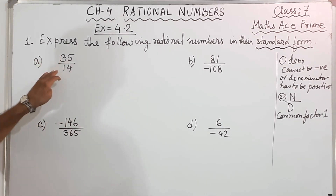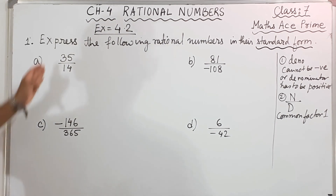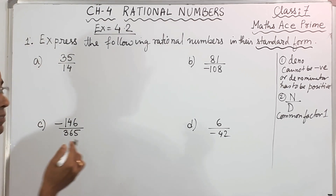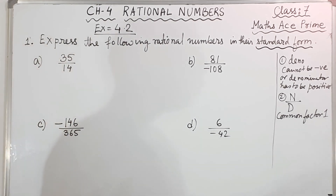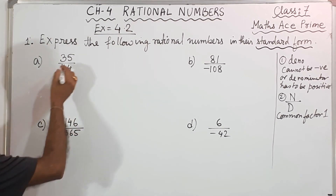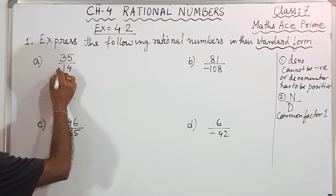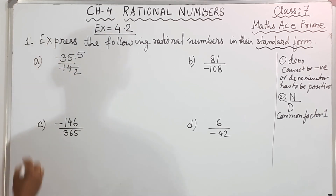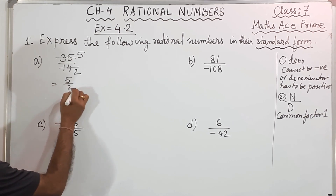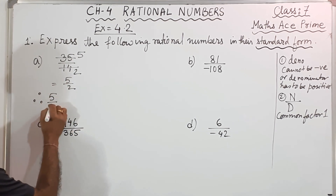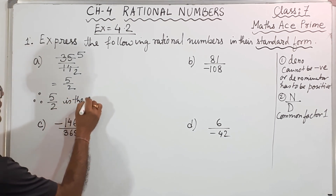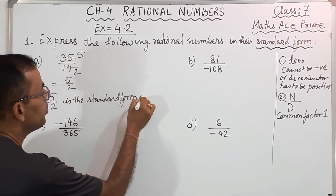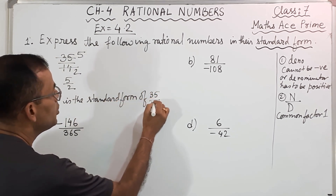Now you see sum number A: 35 by 14. Here common factor is there, because 35 means 7 into 5, and 14 means 7 into 2. So common factor is there, so I can reduce it. 7 twos are 14, 7 fives are 35. So what I get? 5 by 2. Therefore, 5 by 2 is the standard form of 35 by 14.